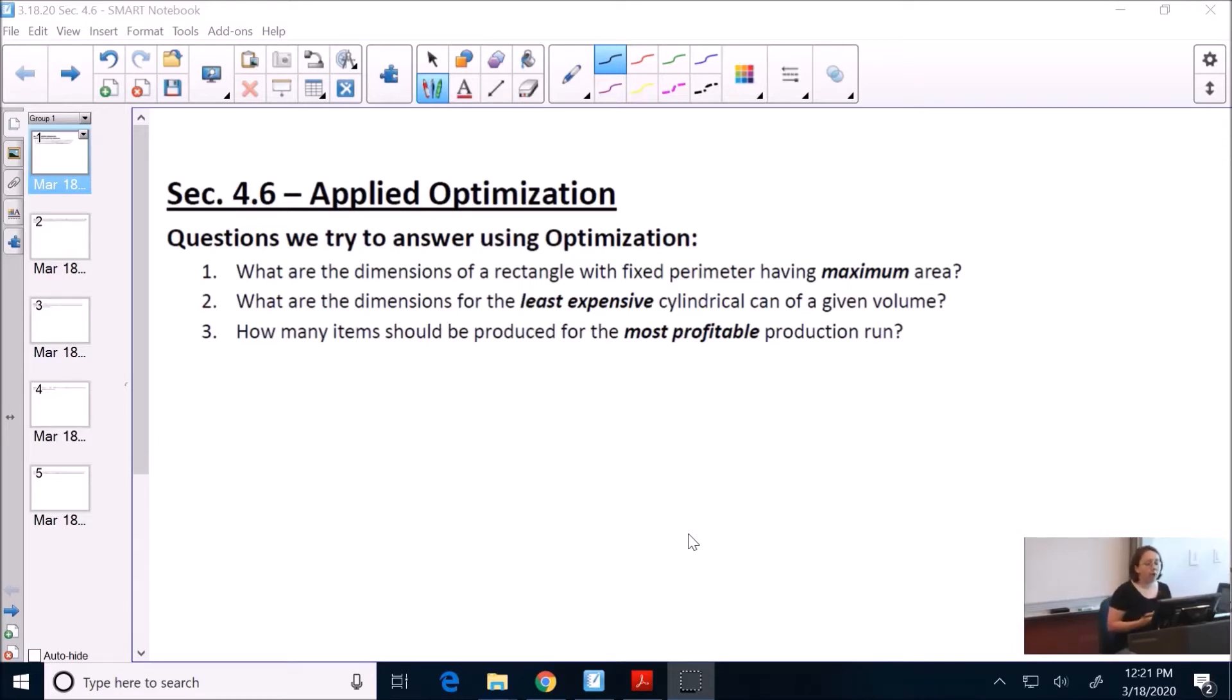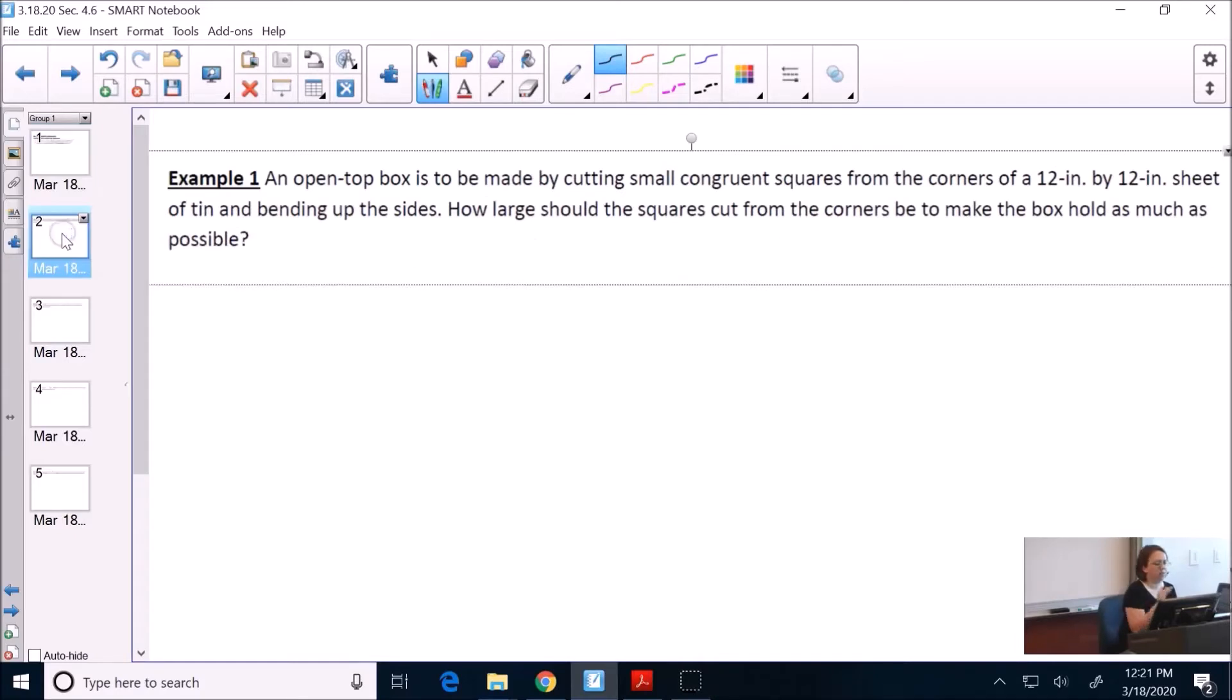Number 3. How many items should be produced for the most profitable production line? So this can be an application of business and manufacturing. They want to maximize their profits. That's always a reasonable thing to do when you're a manufacturing company. Another question we could answer using this type of problem that we're going to look at here. So I'm going to look at 4 problems, and I want to encourage you that if you get stuck on a homework question, feel free to email it to me, and I'll do more. But I'm going to start with these 4. These are the most popular and most traditional.